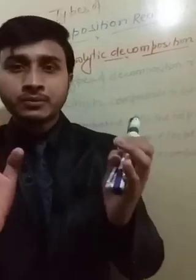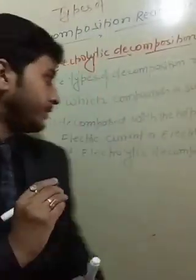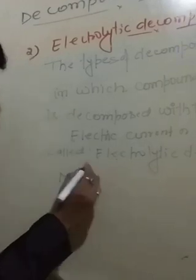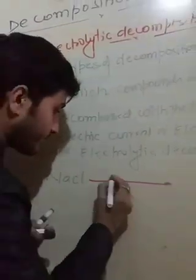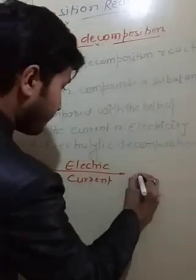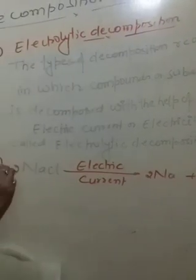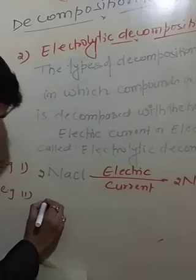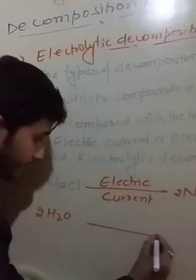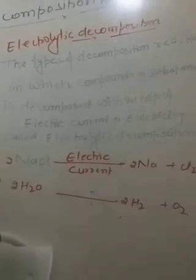For example, the decomposition of sodium chloride is a well-known example of electrolytic decomposition. NaCl, on passing electric current, gives Na and Cl. This is the first example of electrolytic decomposition.